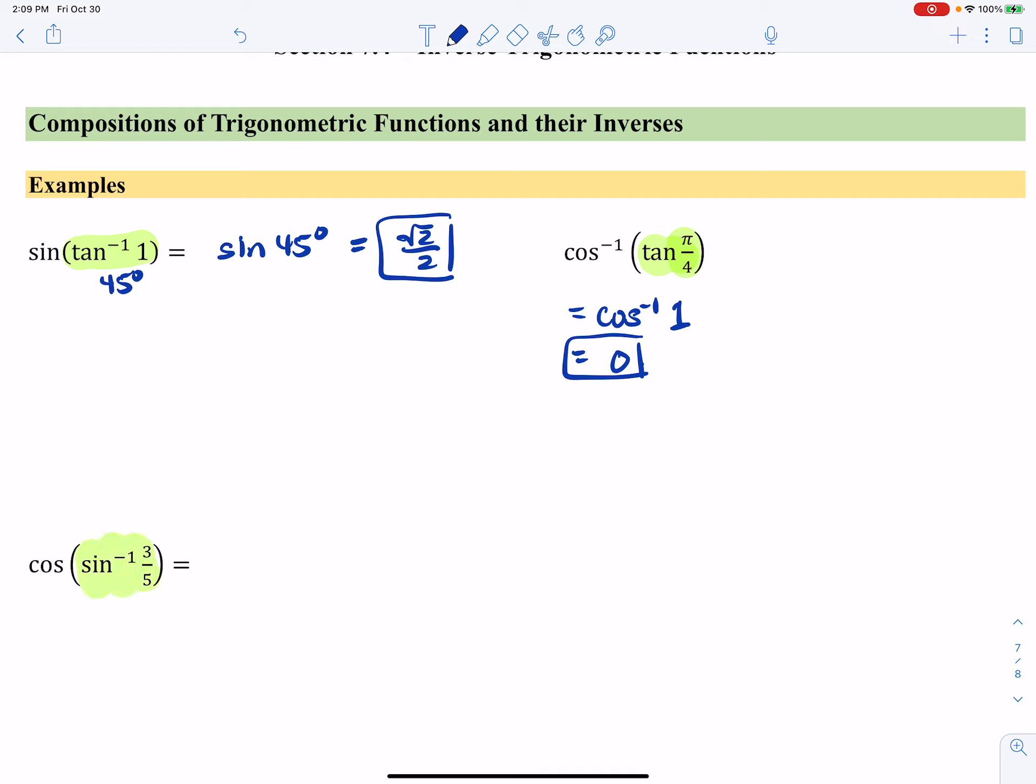But what I can do, I'm going to highlight it anyway. I'm going to say that theta is the sine inverse of 3 fifths, which means the sine of theta is 3 fifths. So whatever theta is, that's what I know about it. And what I want, I want to find cosine of theta. Because if I'm replacing all of this with theta, I want cosine of theta.